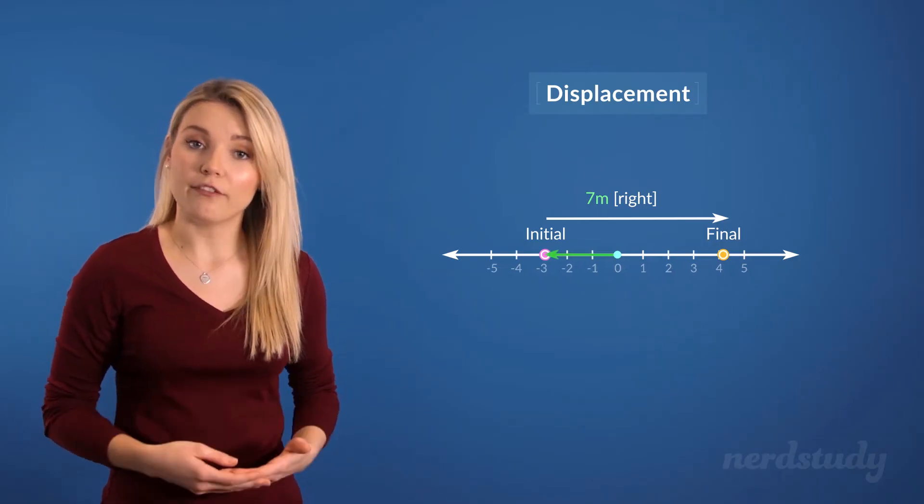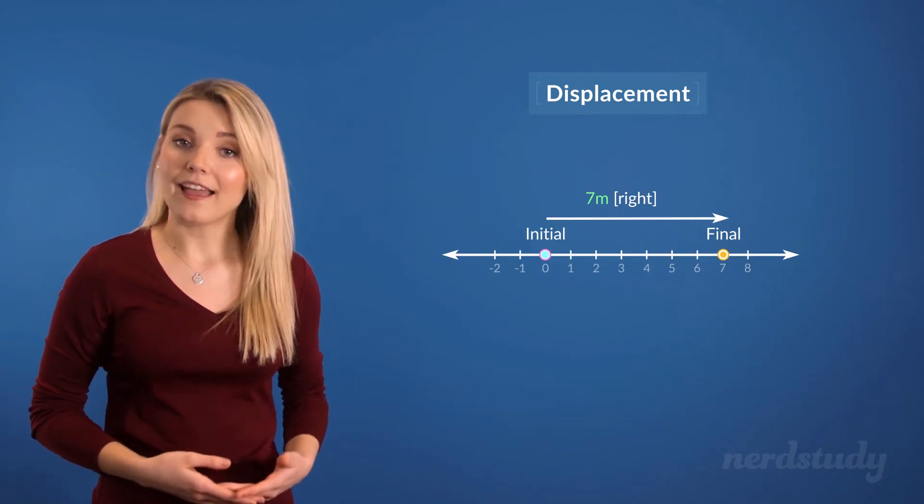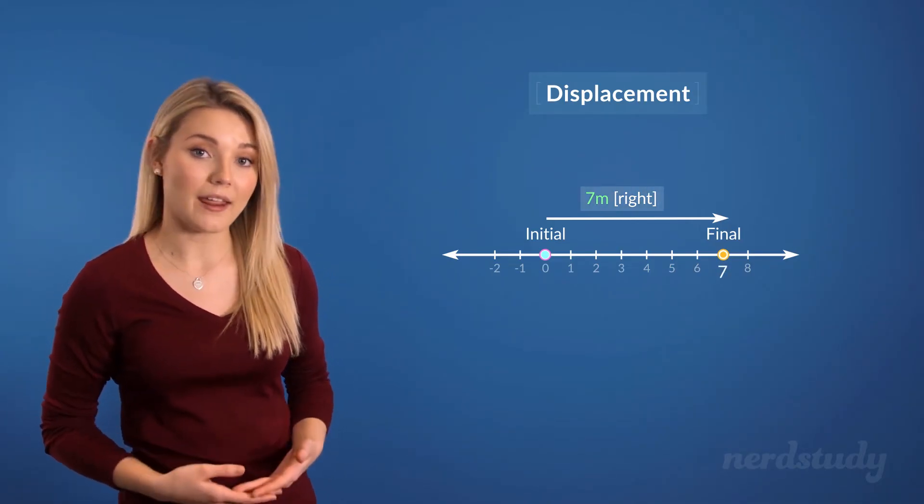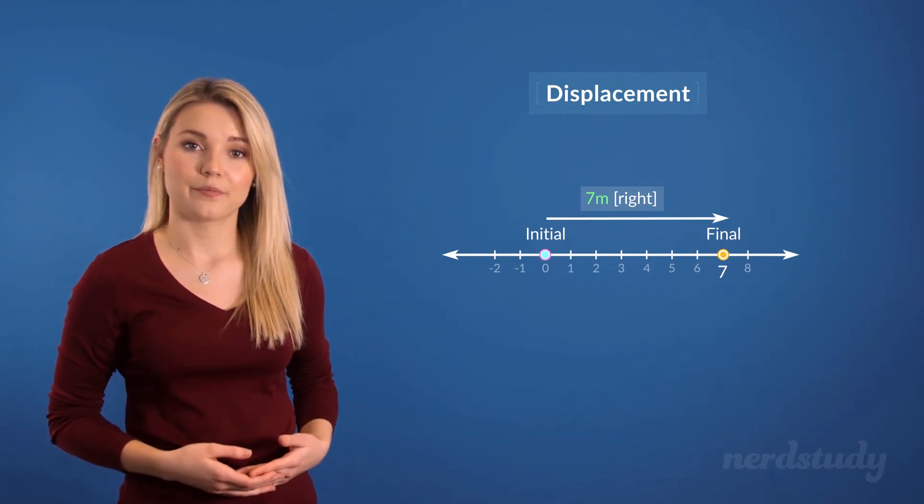So if we move the origin 3 meters to the left, we find that the final position of the particle is 7 meters to the right of the new origin. Good!